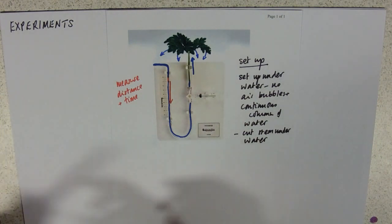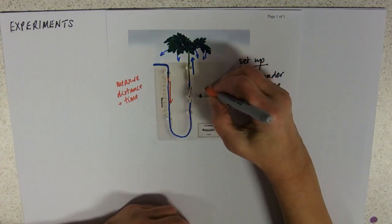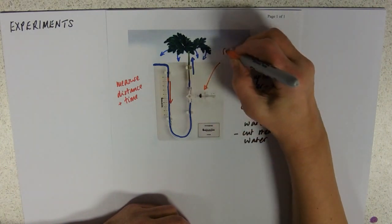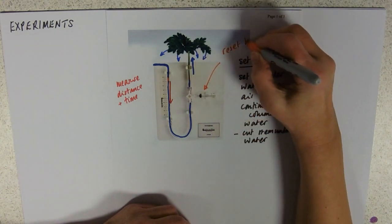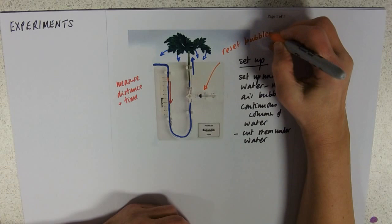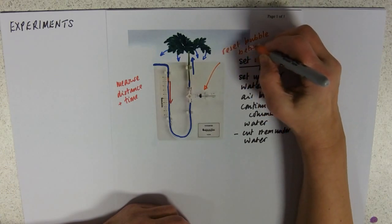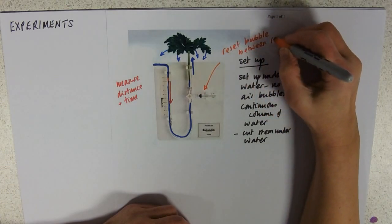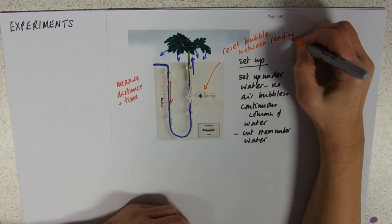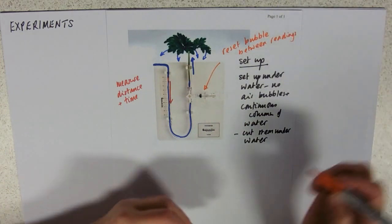What's your syringe for? Your syringe, this is to reset the bubble between readings and of course we used it to draw the air bubble up in the first place.